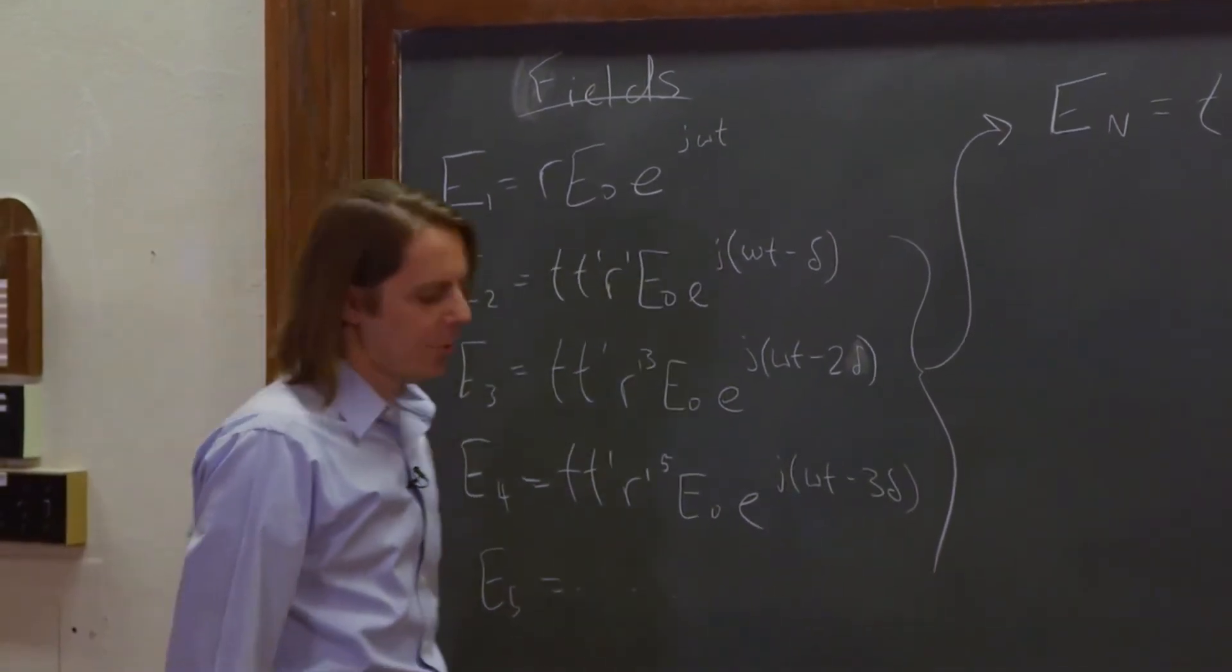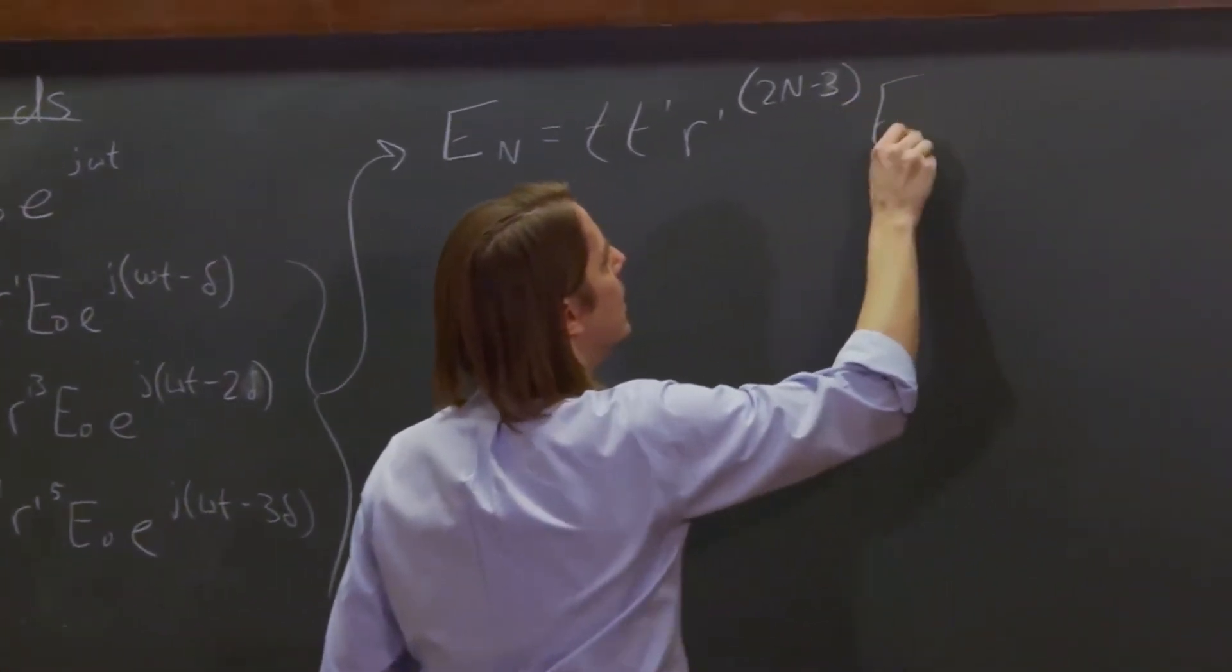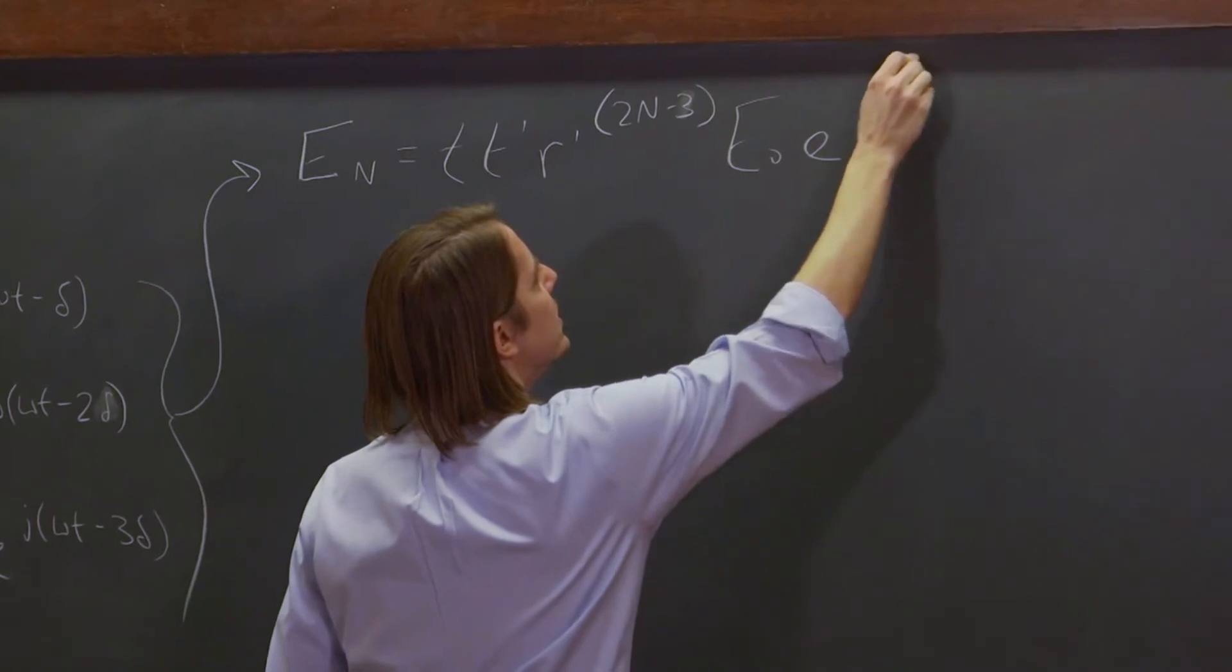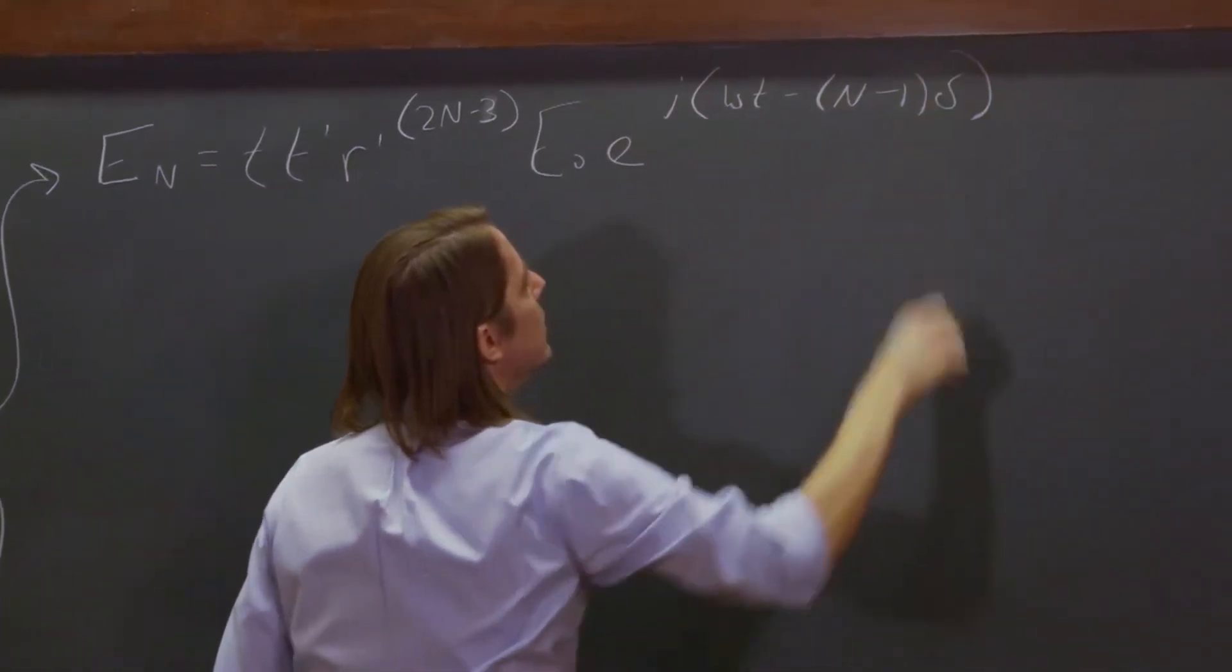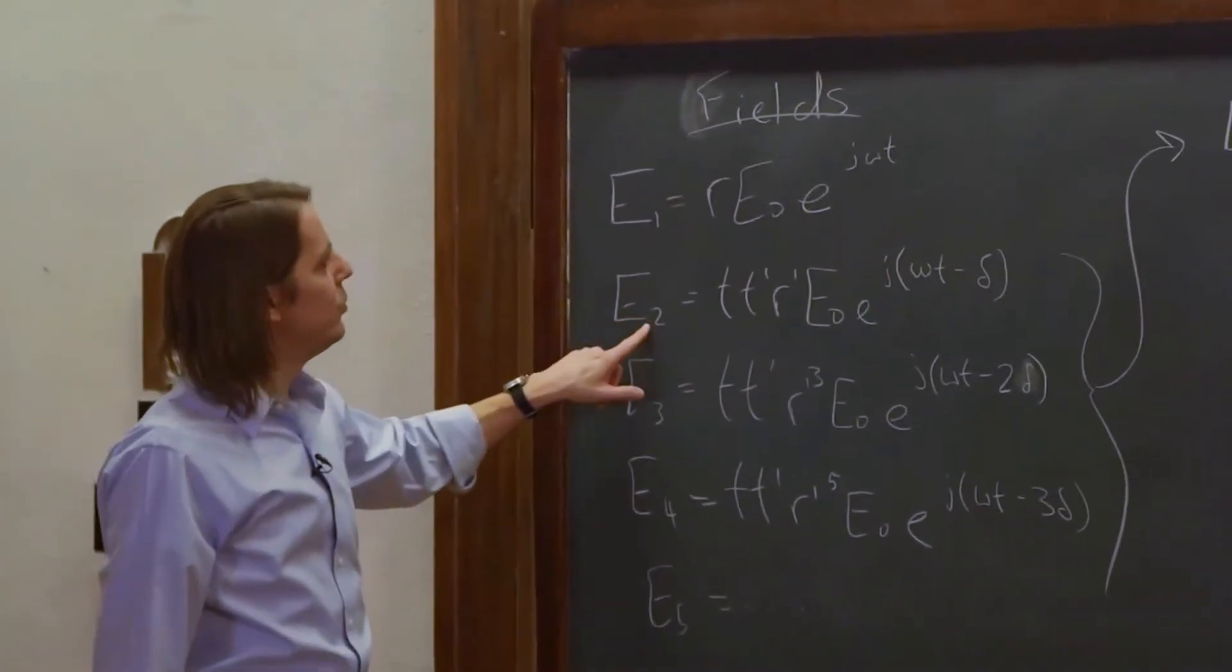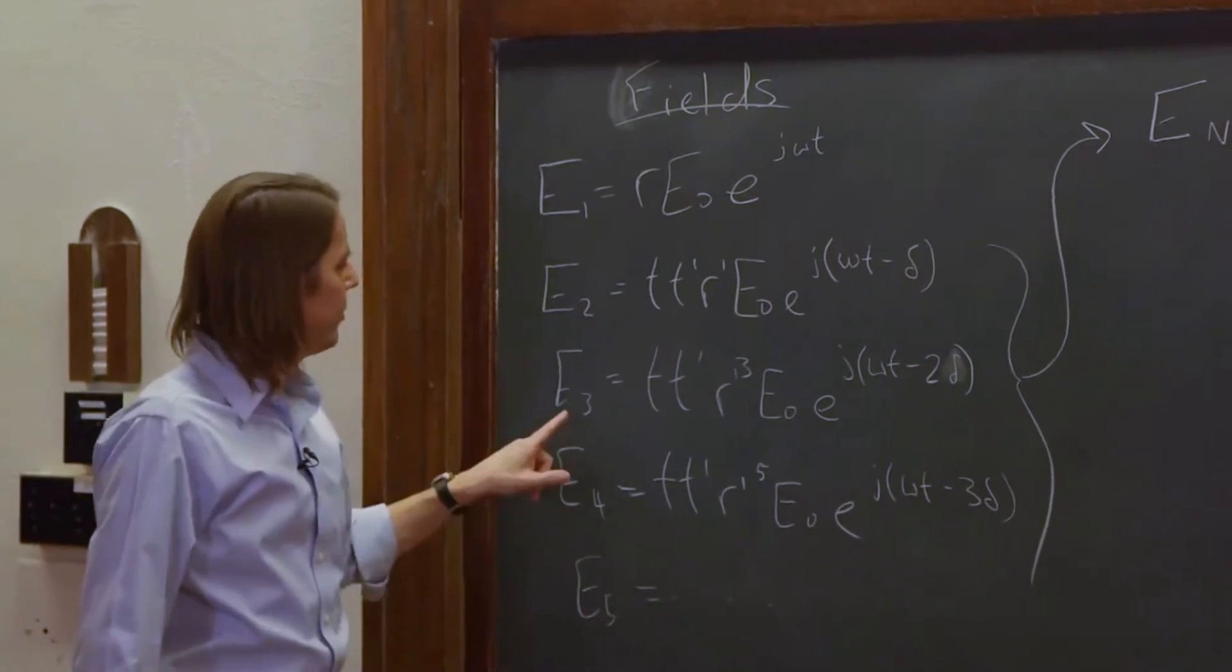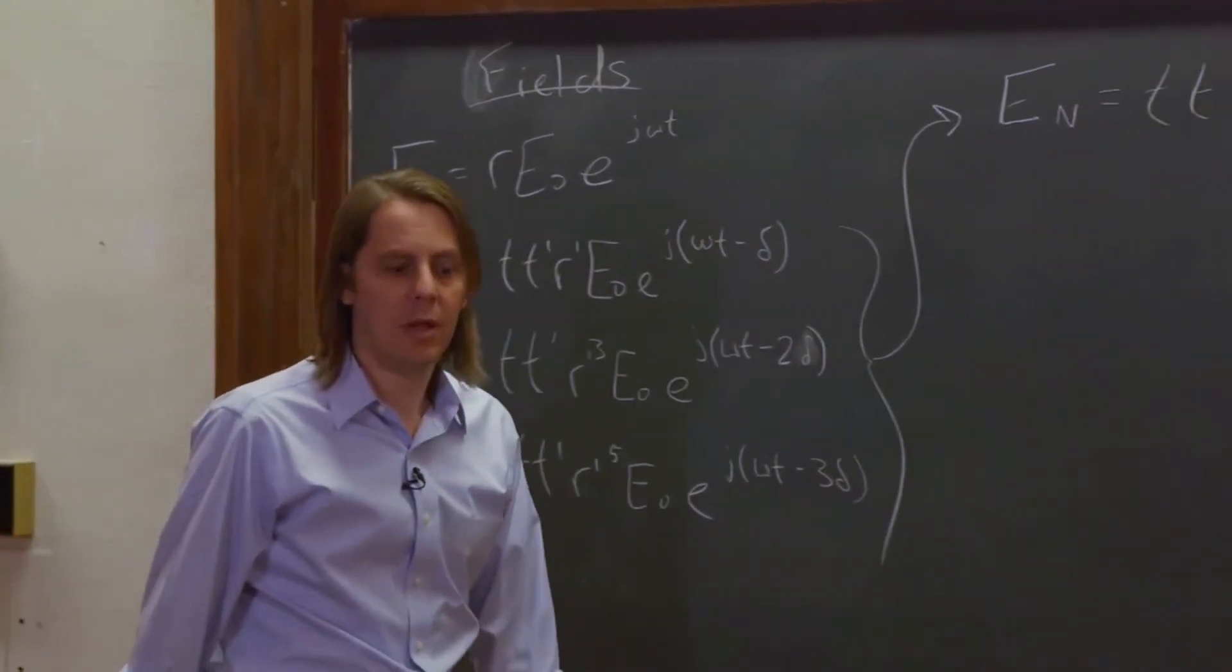So T, T prime, R prime to the two n minus three, E naught, E to the J omega T minus n minus one delta. Let's see, is that right? Two minus one is minus one delta. Three minus one is minus two delta. Four minus one, yeah, it's minus that delta.